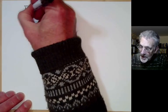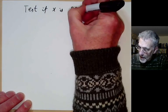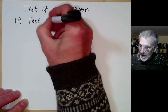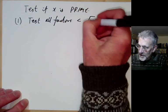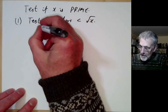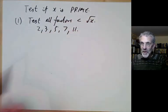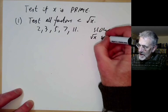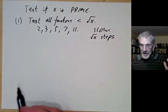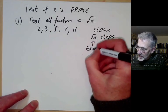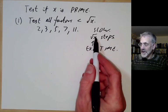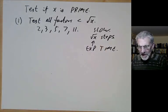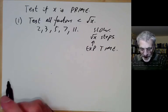Now I want to discuss algorithms to test if x is prime. The first method is to test all factors less than the square root of x. The trouble is this is OK for x up to a few hundred by hand, or a few trillion by computer, but it's really slow in general — it takes about root of x steps, and this is actually exponential time. Exponential time means exponential in the number of digits needed to write x, not in x itself.